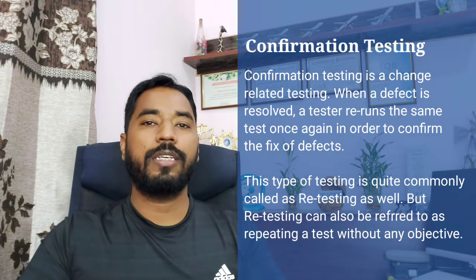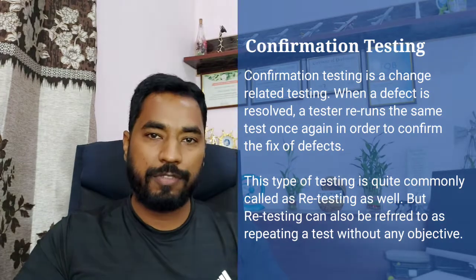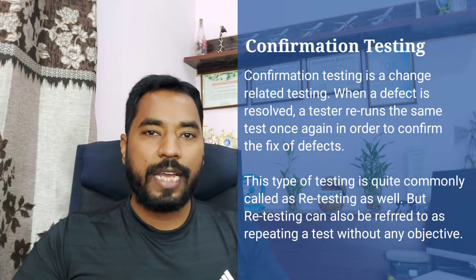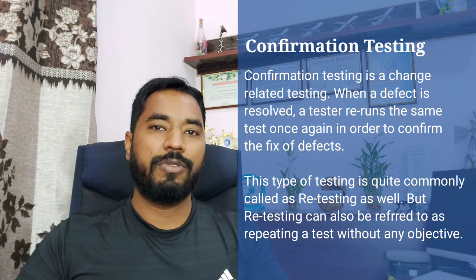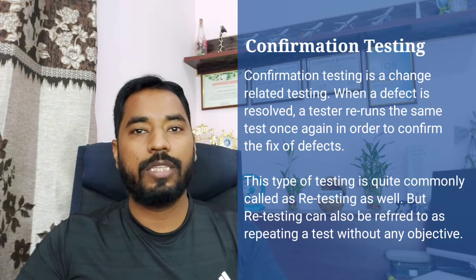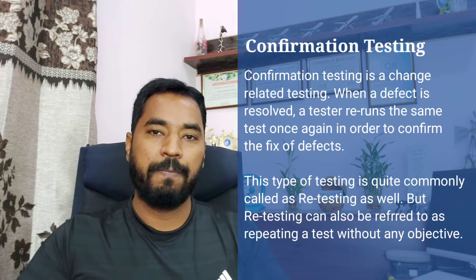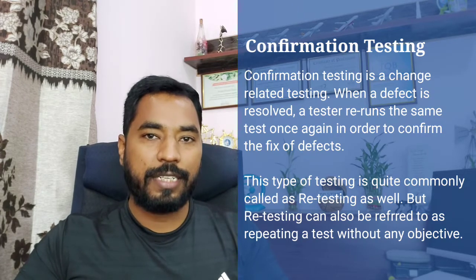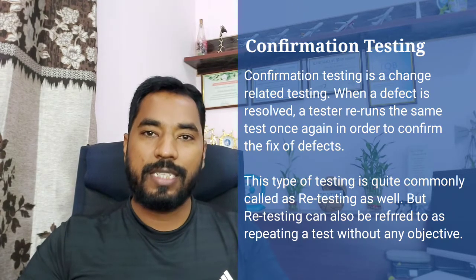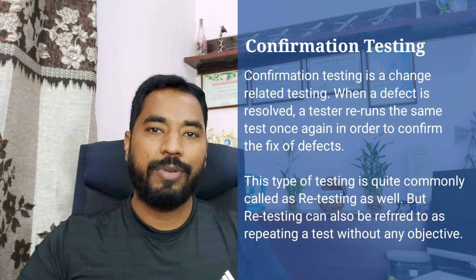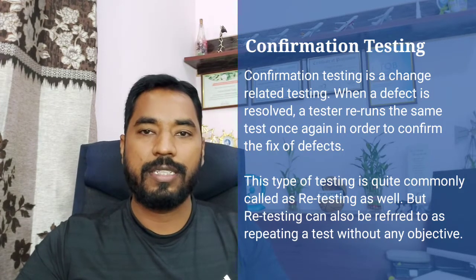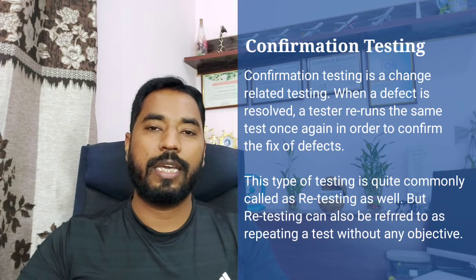As per the International Software Testing Qualification Board, the terminology now says that retesting is all about repeating a test without a specific objective, and that's where the conflict has happened. Most organizations say that retesting is about confirming a fix by re-running the same test that revealed the defect.